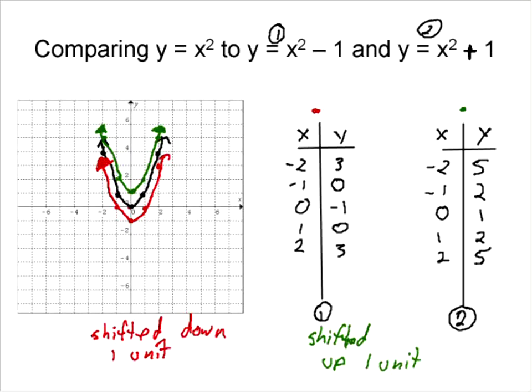Now let's look at this one. What's happened to the vertex now? Well the vertex on our green one is at (0, 1). And our vertex, when we shift the graph down, is at (0, negative 1).